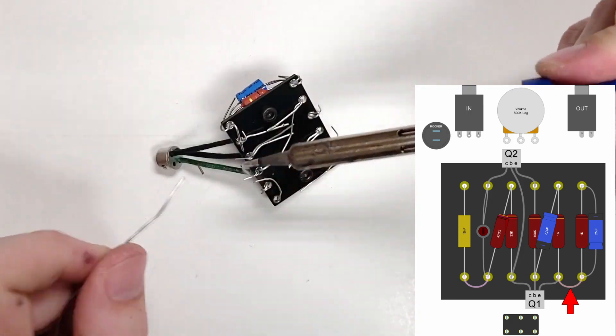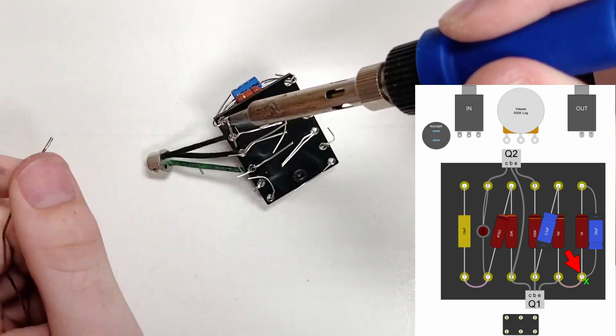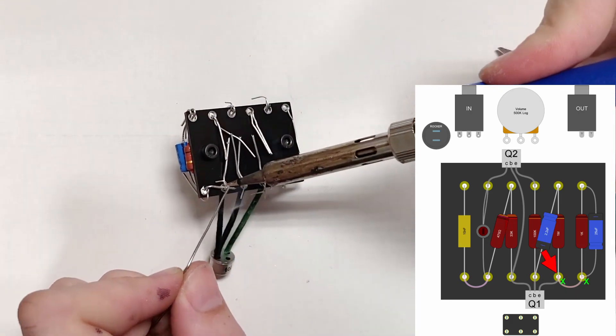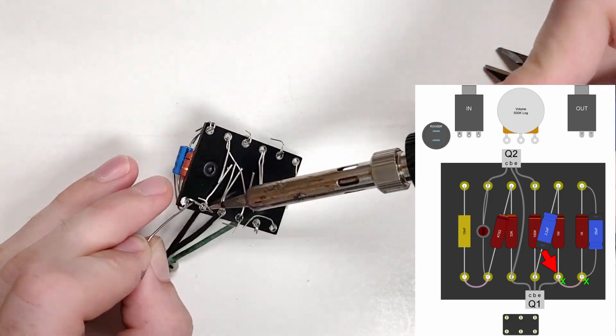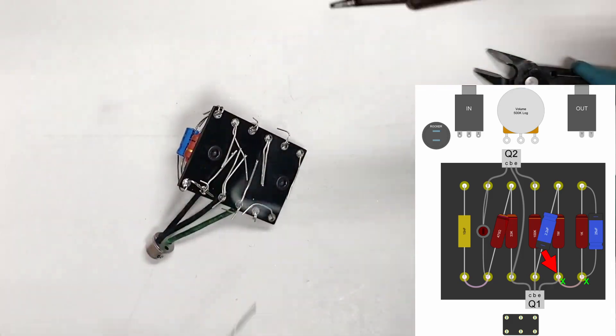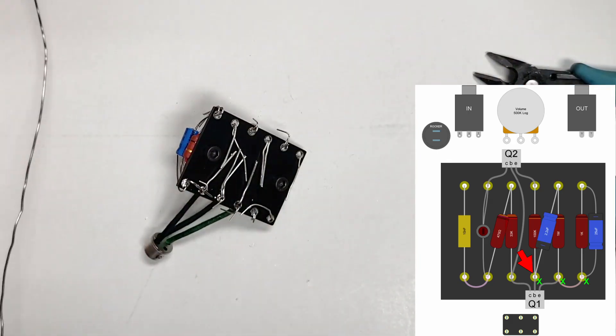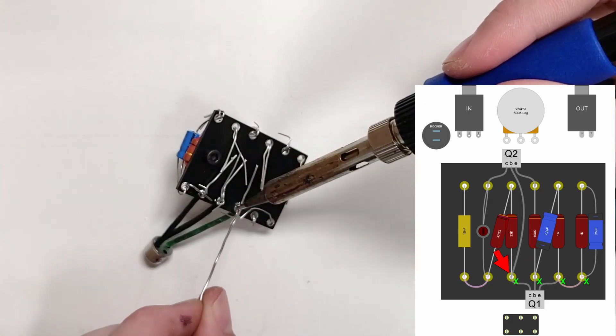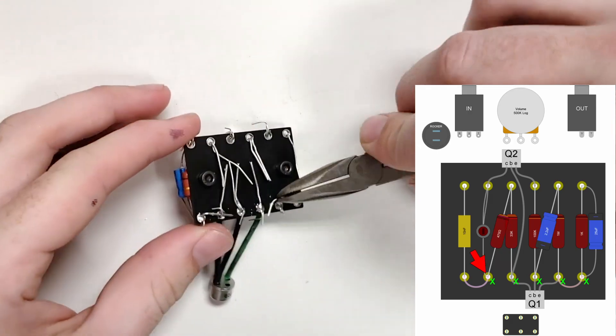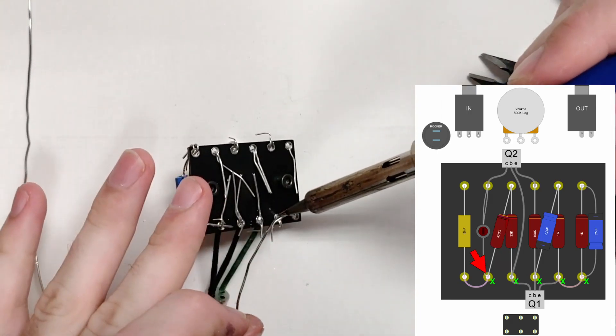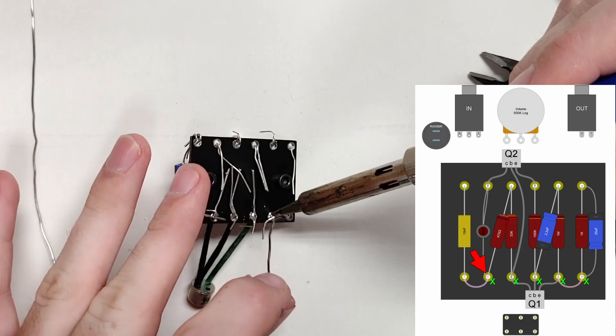Once all connections have been made to an eyelet, they can be soldered. Here I'm soldering all connections on the bottom of the board. This lead here is bent into place for connecting the two eyelets. Once the soldering is done, the excess leads are clipped.